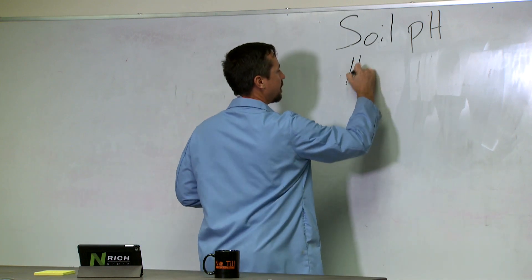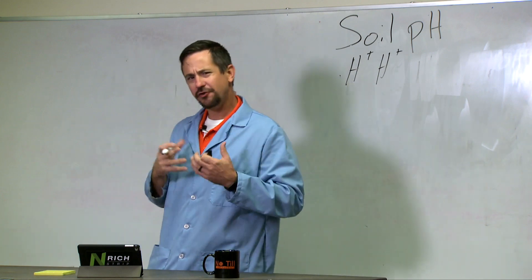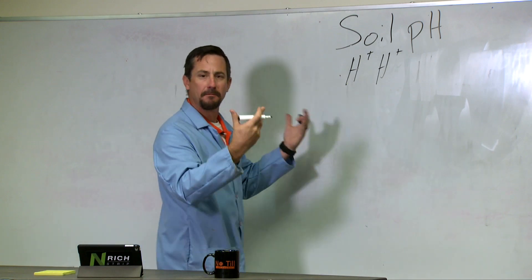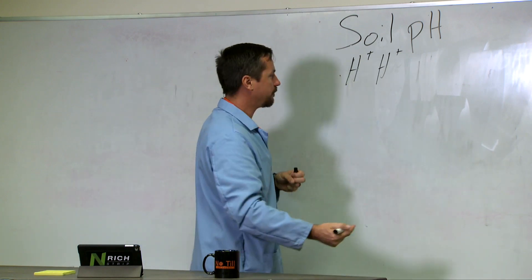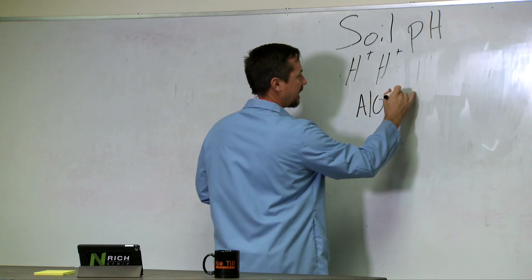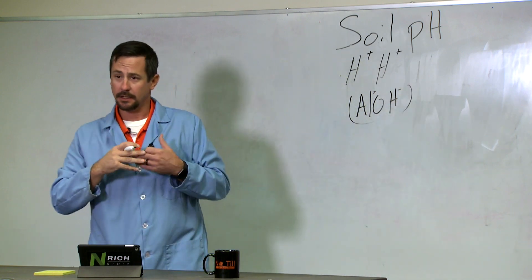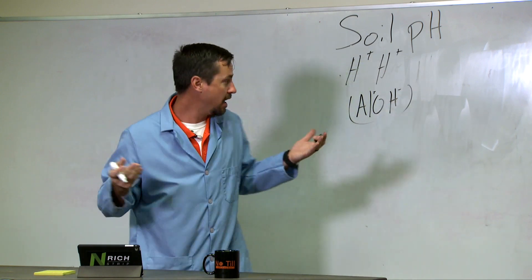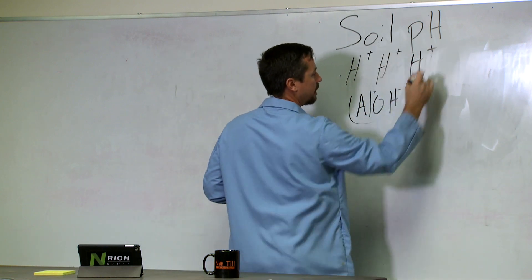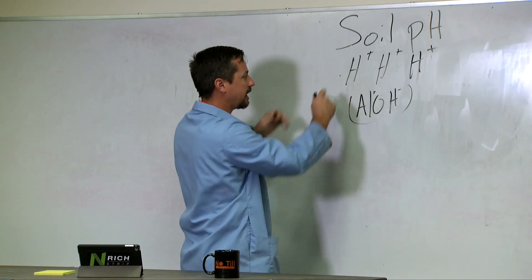At low pH, we have an abundance of hydrogen in the soil system. Now the hydrogen itself does not hurt our plants. But when hydrogen becomes abundant and soil pH drops, we have a release of aluminum — which starts out as aluminum hydroxide, a form that doesn't hurt the plant. But as soon as we start getting a lot of hydrogen in the system, that hydrogen wants to go to hydroxide because we're unbalanced — it's heavy on the hydrogen side.